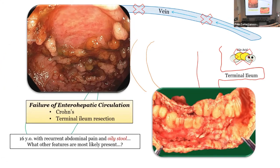The big one for enterohepatic circulation of bile salts is surgical resection and Crohn's disease. How do they present it? A 16-year-old with recurrent abdominal pain and oily stool — that's Crohn's. They're telling you steatorrhea with belly pain in a young person. Then they'll ask the Crohn's derivative, which invariably involves vitamins — bruising, et cetera.